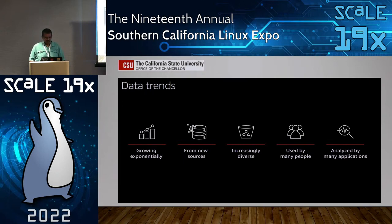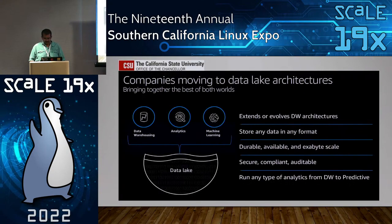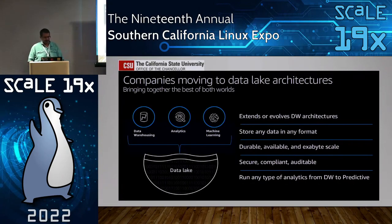These are trends you can see: exponential growth, new sources data comes from, the diversity of data, and the fact that it's being used by multiple people and many applications. It also means people need to have a way to process the data — someone needs to create an architecture platform for generating meaningful results from that data.